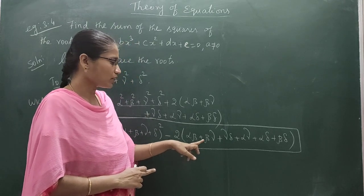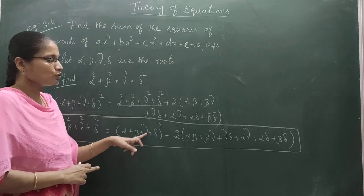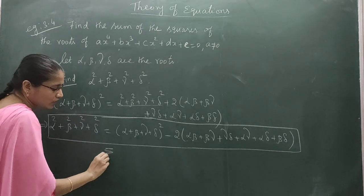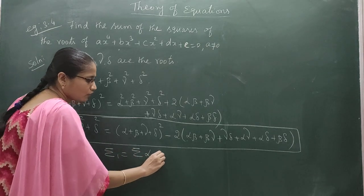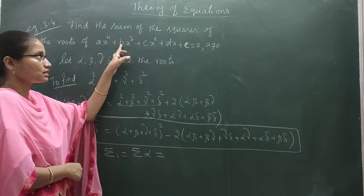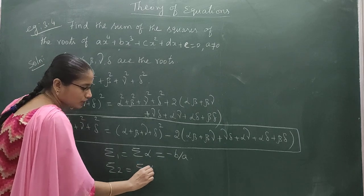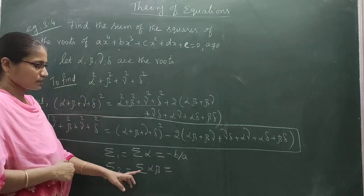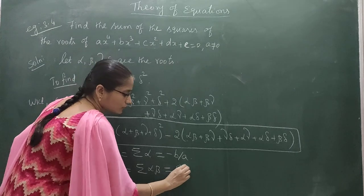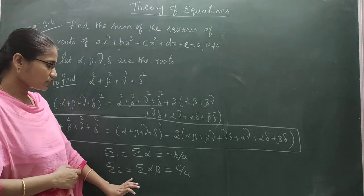We already know from Vieta's formulas that Σ₁ (summation alpha) equals -B/A — starting with the second coefficient with a minus sign. Also, Σ₂ (summation alpha·beta), the sum of products of roots taken 2 at a time, equals C/A, the next coefficient. So it is enough to find Σ₁ and Σ₂ from the general equation.